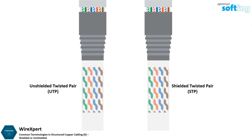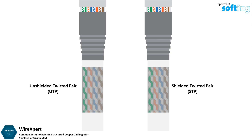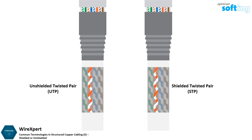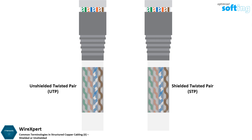Both types of twisted pairs use the same color codes: Green, Green-White, Orange, Orange-White, Blue, Blue-White, Brown, and Brown-White.